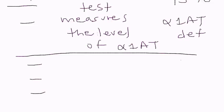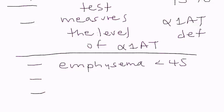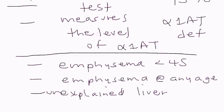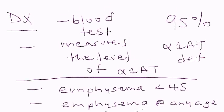Certain clinical clues should raise suspicion. First, people who develop emphysema at a young age — less than 45 years old. Second, non-smokers without any occupational exposure who develop emphysema at any age — that is a red flag. Third, unexplained liver disease or cirrhosis. These are the populations in which you suspect alpha-1 antitrypsin deficiency.